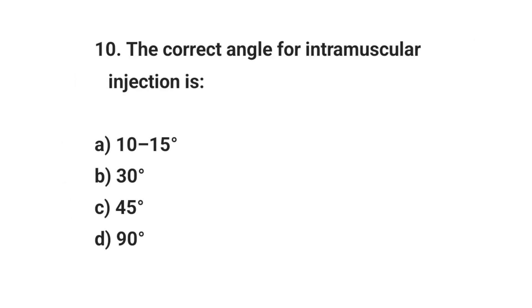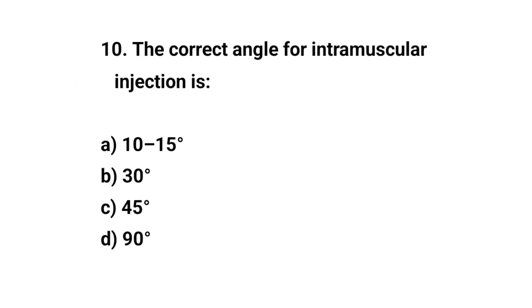Question No. 10. The correct angle for intramuscular injection is. Right answer is D. 90 degrees.